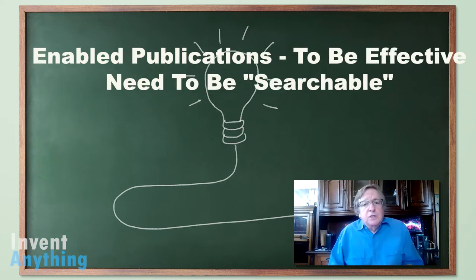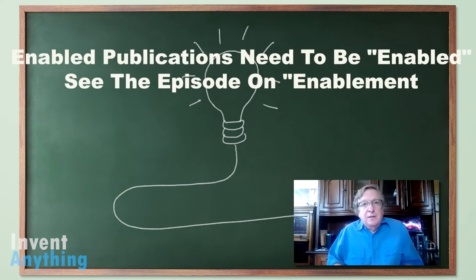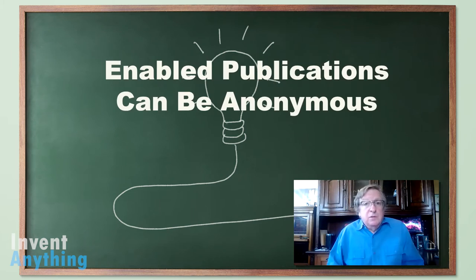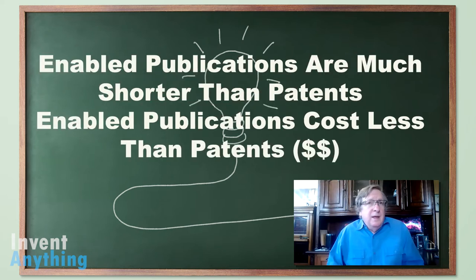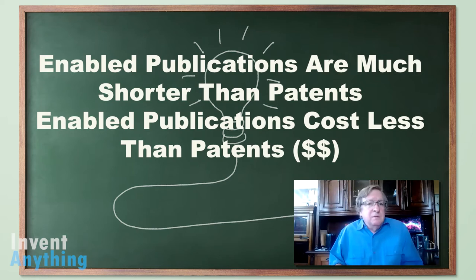Enabled Publications need to be searchable, and the patent examiner loves the fact that they can go to IP.com, be in one database, and search lots of references. They also need to be enabled. There's no requirement of inventorship like a patent — no oath of declaration, no inventor name, no company name. It can actually be anonymous, which is a great strategy. To file a publication is several hundred dollars versus the thousands and thousands for patents. And writing them up doesn't take that much time — a publication of three or four pages.